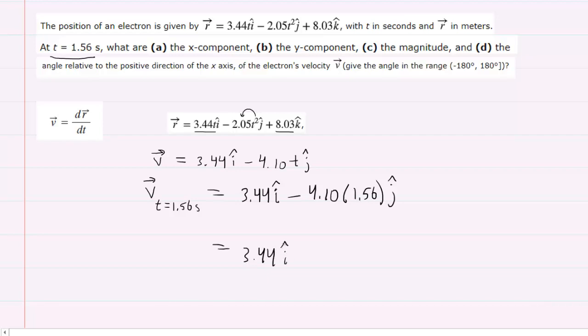And then the j hat component, or the y component, will turn out to be minus 6.396.